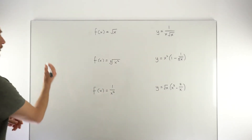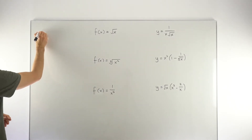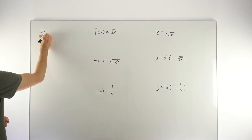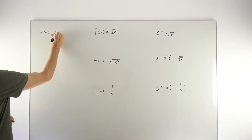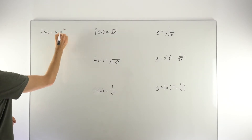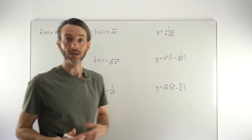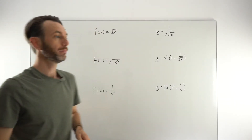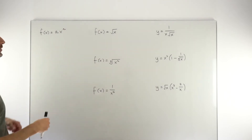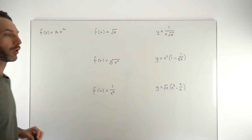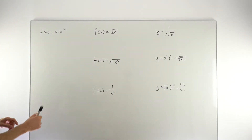So let's start by considering what is the perfect format for the power rule — what is the expected format of the terms? The expected format is AX to the N, where A and N are real numbers, not necessarily whole numbers. Quite often they are whole numbers, but sometimes they're fractions or even decimals, though usually whole numbers or fractions.